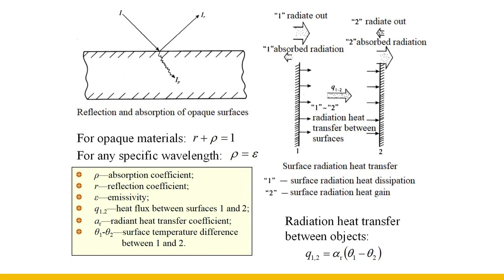The amount of radiation between two surfaces depends primarily on the surface temperature, the ability of the surface to emit and absorb radiation, and their relative position. For two surfaces at any relative position, without considering multiple reflections and only considering the first absorption, the general formula for surface radiation heat transfer is: heat flux equals the radiation heat transfer coefficient multiplied by the surface temperature difference of the two objects.